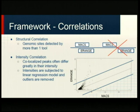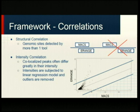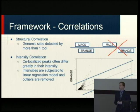When correlating peaks or regions of interest, there are two approaches. The first, structural correlation, is straightforward: a peak or site is considered the same if called by more than one tool. For example, a site predicted by MACS and another by erange — if they intersect, the site is predicted by more than a user-specified number of tools and is considered the same peak. If they don't overlap, we discard them.